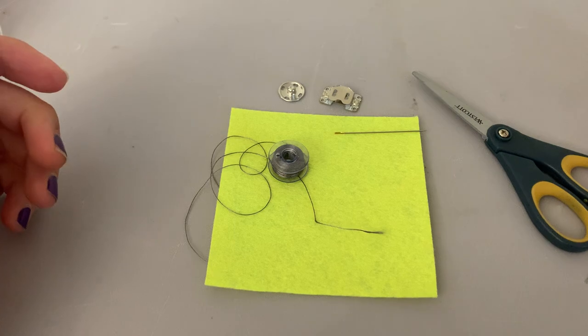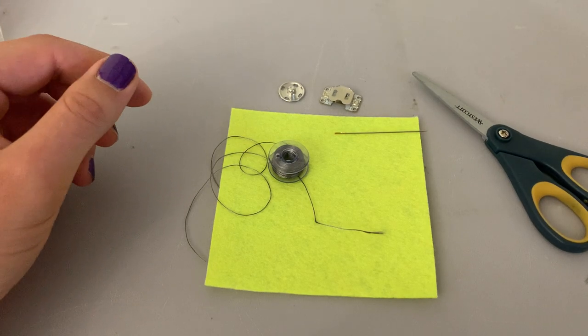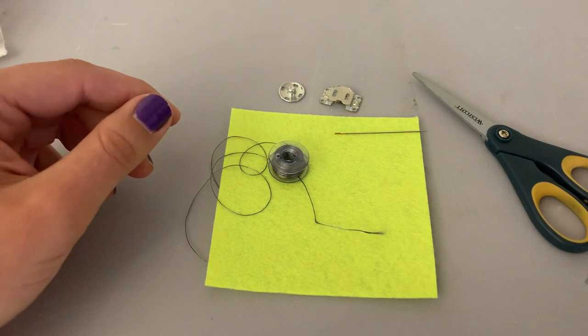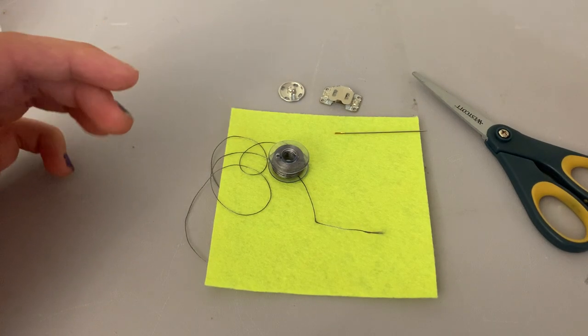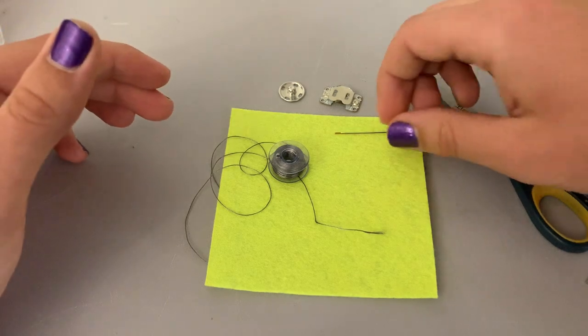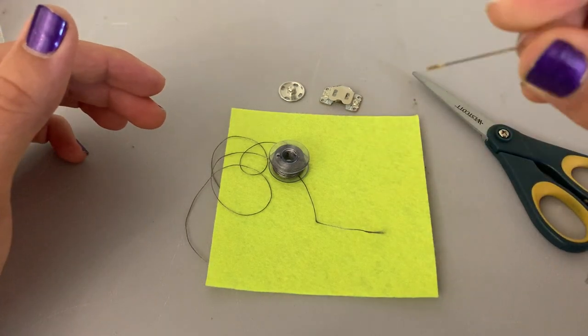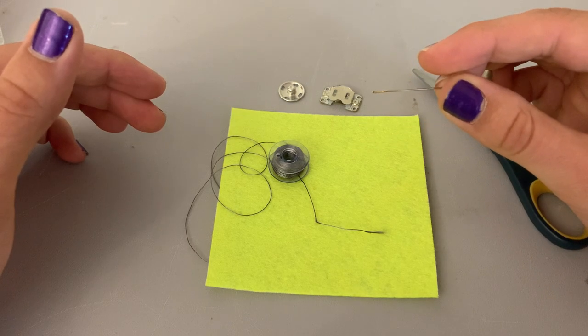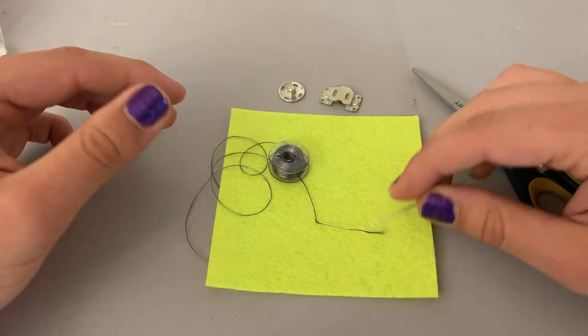The first thing I need to do is thread the needle. We will be double threading the needle, which just means you pull your length of thread halfway. Before I even get to that though, I should thread the needle. That means to get the thread into the little eye of the needle right there. I need to get thread through it.